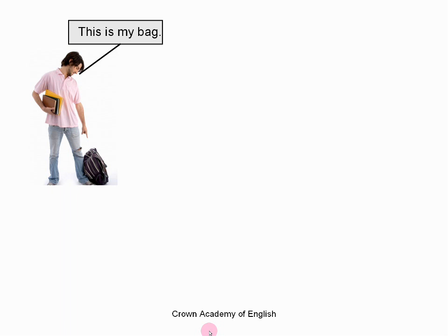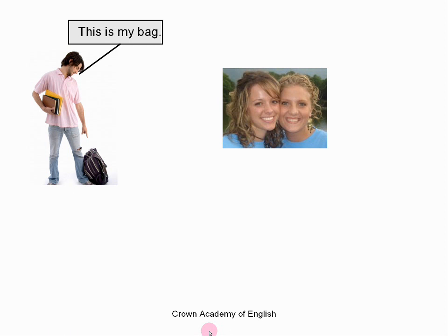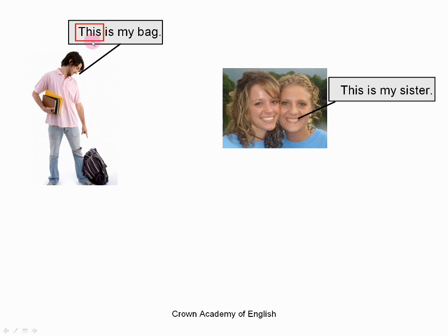This is my bag. So the man is saying, this is my bag. And the girl on the right, she is saying, this is my sister. So let's look at these sentences. He's using the word 'this' — in both sentences it is an expression. We are saying, this is my bag and this is my sister. So 'this is' is an expression we use to show a single object or a single person who is close to us, who is near us.